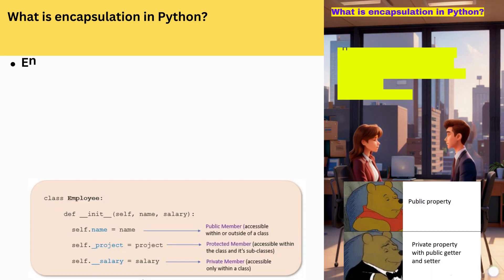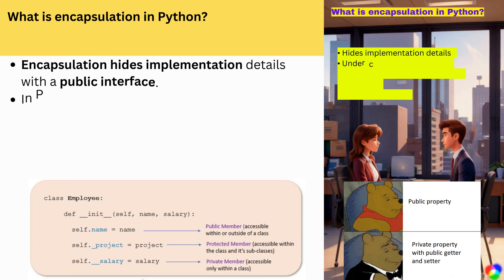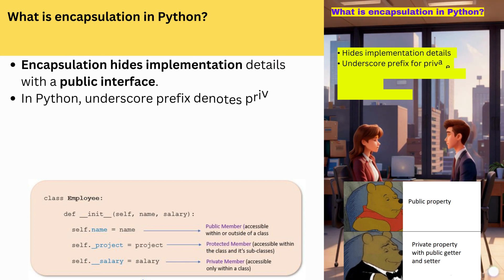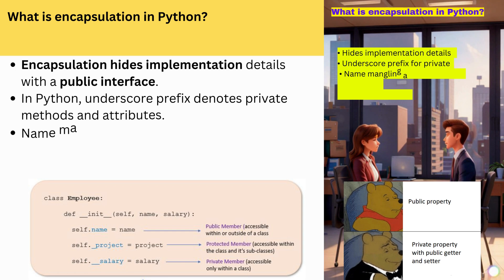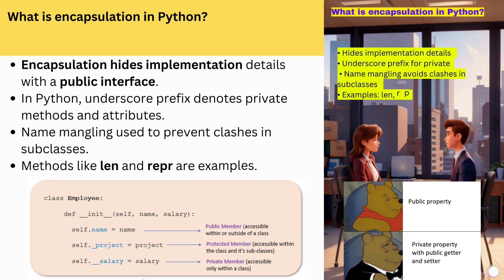What is encapsulation in Python? Encapsulation hides implementation details with a public interface. In Python, an underscore prefix denotes private methods and attributes. Name-mangling is used to prevent clashes in subclasses. Methods like __len__ and __repr__ are examples.